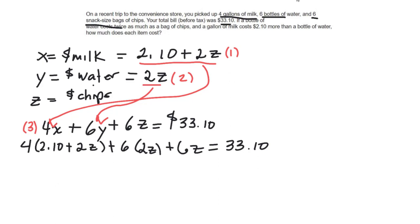Alright, and that's what you want to end up doing. And so now I can distribute the 4 times 2.10, so I get 8.40, the 4 times the 2Z, so I get 8Z.